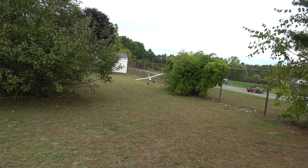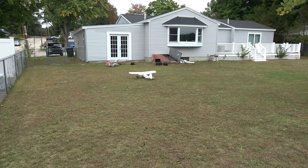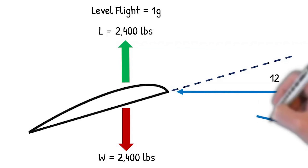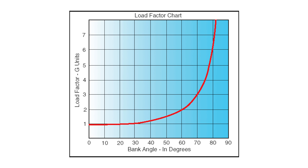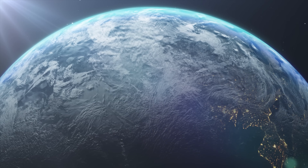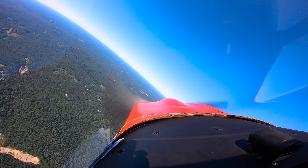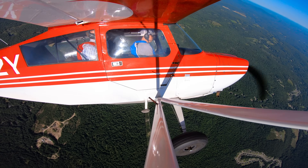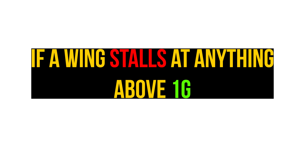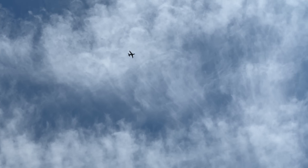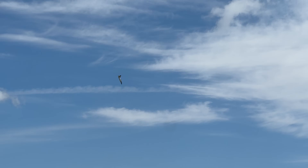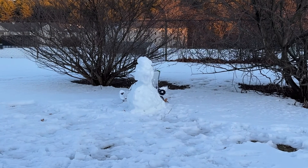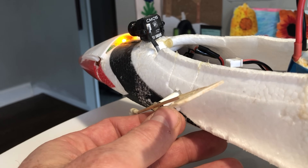Before we move forward, there are a couple more terms to define. Load factor is how much lift you are producing compared to how much your aircraft weighs, described in terms of G's, with the gravity we feel standing on Earth being 1G. For example, if you are in a steep, level, coordinated turn at 60 degrees of bank, you are pulling 2G's. If a wing stalls at anything above 1G, it's considered an accelerated stall. As RC pilots, we don't fly off of an airspeed indicator or an angle of attack gauge — we learn how to gauge our angle of attack from a third-person perspective.